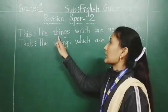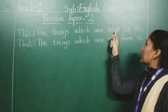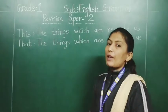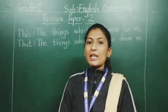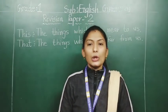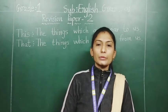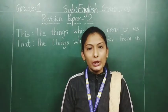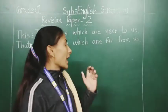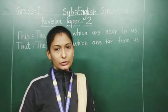The word 'this' refers to things which are near to us. We use 'this' to talk about a person, thing, place, animal or bird which are near to us. For example: This is a chair.